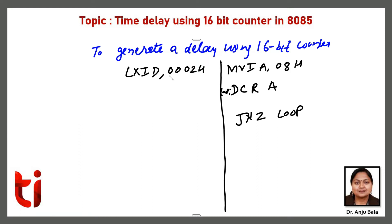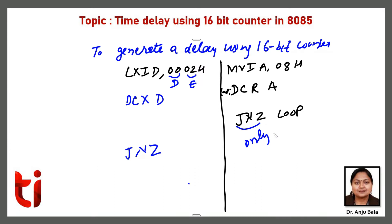For a 16-bit counter, the value is stored in the D-E register pair. If I need to decrement it, I have to use DCX D to decrement the 16-bit counter. But after that I cannot directly use the JNZ instruction, because JNZ only works on 8-bit instructions. When using DCX D, it is a 16-bit decrement and does not affect the zero flag.